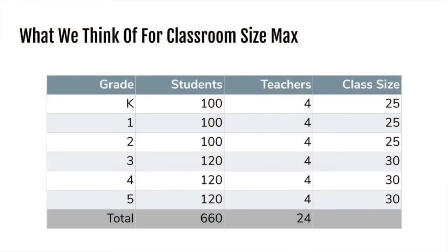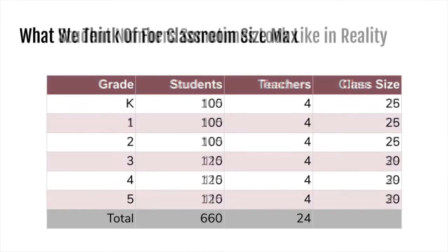This is what we usually think of when we look at classroom max sizes in elementary schools — it's pretty straightforward. This isn't what class sizes actually look like, but rather the maximum. This is an example of how a slight shift in student enrollment can change dramatically how a school is staffed. Here we've got five extra students each in kindergarten, first, and second grades, and five fewer students each in third, fourth, and fifth grades.